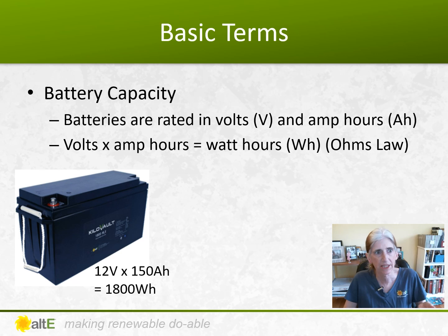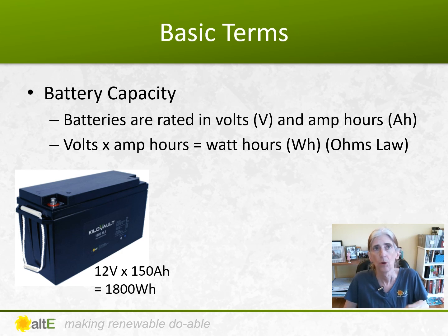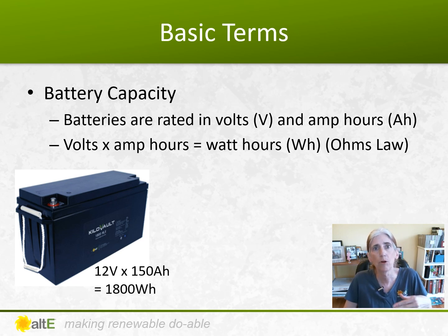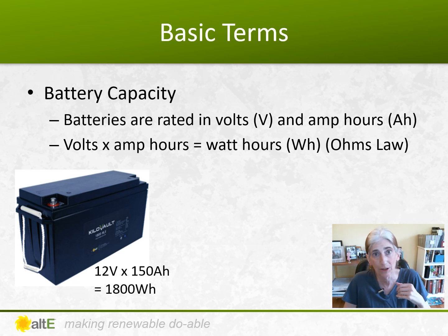The first term we're going to discuss is battery capacity — that is how big a battery is. A deep cycle battery is rated in both volts and amp hours. Volts times amp hours equals watt hours, and that's Ohm's law. With lead acid batteries, you'll often hear them talked about in amp hour capacity, while lithium batteries tend to talk more about watt hours. You need to know the voltage potential of the battery so that you know how many batteries you need in series or parallel to make the right size battery bank.